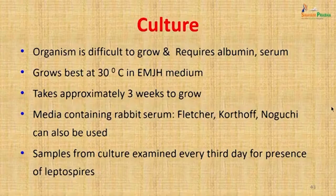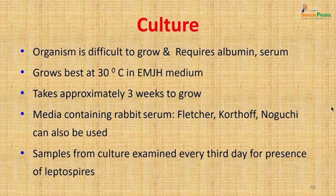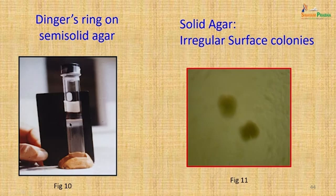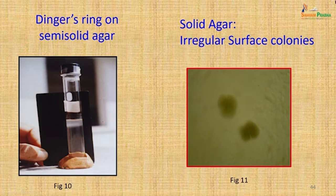The organisms are difficult to grow and require albumin and serum in the medium; they grow best at 30°C and take approximately 3 weeks to grow in EMJH medium. That is why treatment must be started on clinical suspicion based on microscopy and serology. Media containing rabbit serum such as Fletcher's, Korthof's, or Noguchi medium can also be used if EMJH is not available. Simple tap water with rabbit serum — Fletcher's medium — can be used. Cultures are examined every third day. In semi-solid medium, a Dinger's ring appears just below the surface showing sub-surface growth, and irregular surface colonies can also be obtained on medium containing rabbit serum.